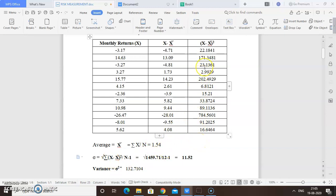These calculations don't even require a calculator. You just select and drag the column, and it will give the total summation. For this total column, the summation is 1459.71 divided by 12 minus 1, which is n minus 1, so 11. If you calculate with a calculator, you will get the standard deviation—the root of this value is 11.52.